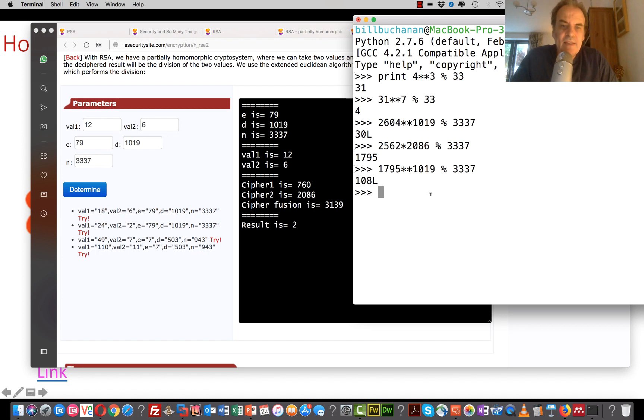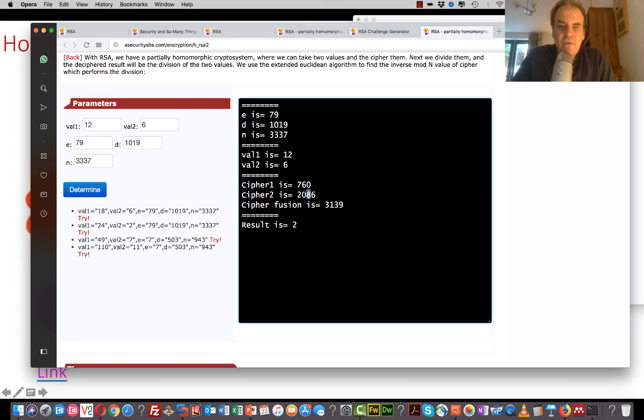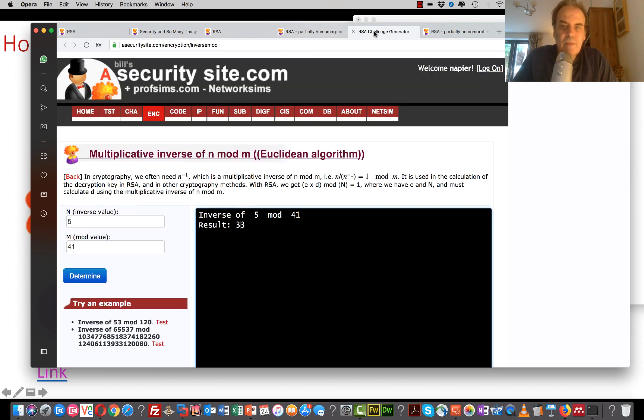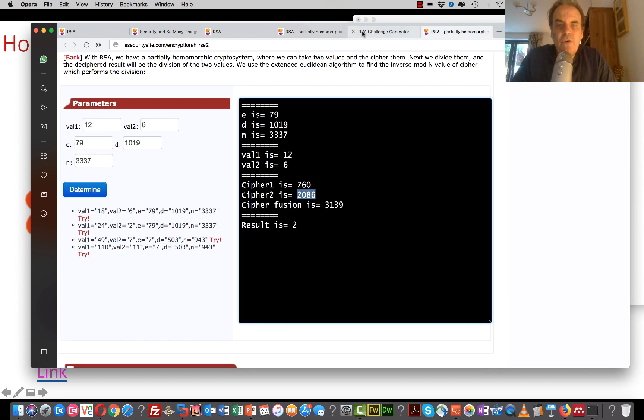So again, we'll just check that. So cipher 1 is 760. And what we need to do is find the inverse of 2086. So it's the inverse of 2086 mod 33337.